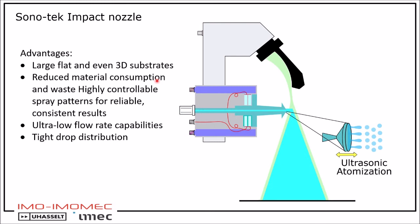So it can deposit layers on large, flat and even 3D substrates. The amount of used material is limited and there is almost no waste. The ultra-low flow rate capabilities by the syringe pump together with the small droplets can result in extremely thin layers, up to 10 µm thick. The small spread in droplet size distribution provides the possibility to create very homogeneous layers depending on the ink.